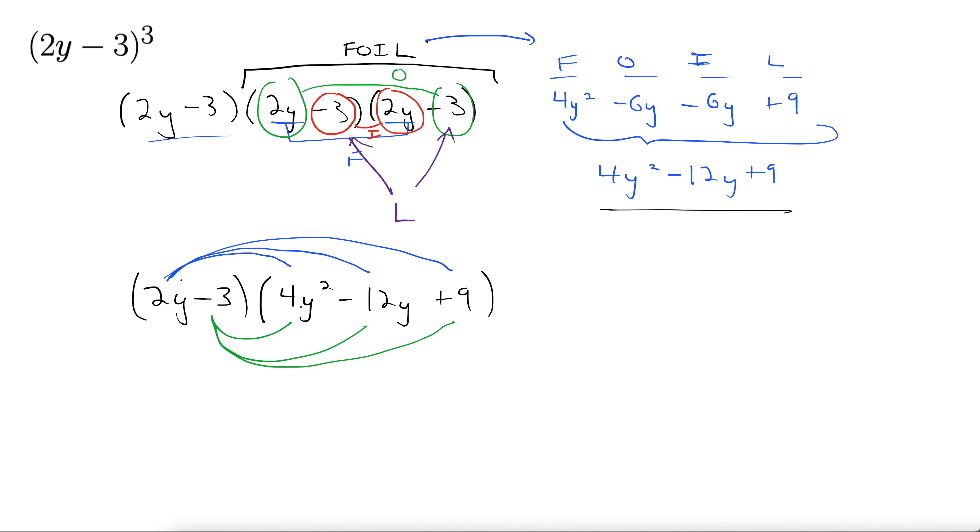2y times 4y squared, that's 8y cubed. y to the first plus y squared is 8y to the 1 plus 2 y to the 3rd. 2y times negative 12y is negative 24, 4y times y is y squared. 2y times 9 plus 18y.